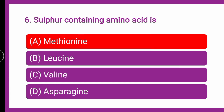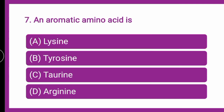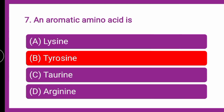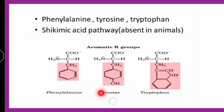Next question: an aromatic amino acid is — whether it is lysine, tyrosine, taurine, or arginine. The aromatic amino acids are phenylalanine, tyrosine, and tryptophan. They are called aromatic because they contain the phenyl ring in their structure. So the correct answer is tyrosine — along with phenylalanine and tryptophan.